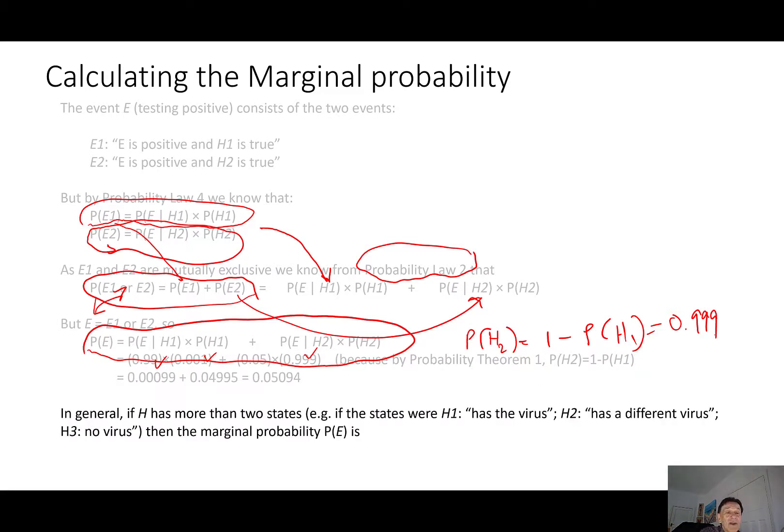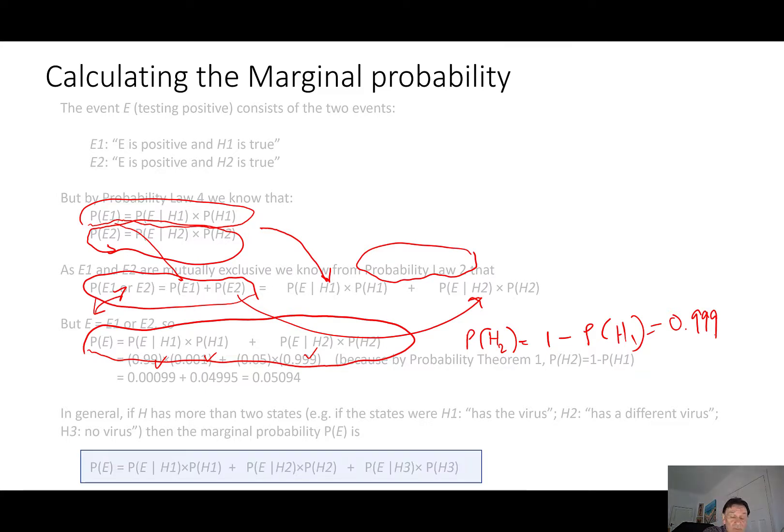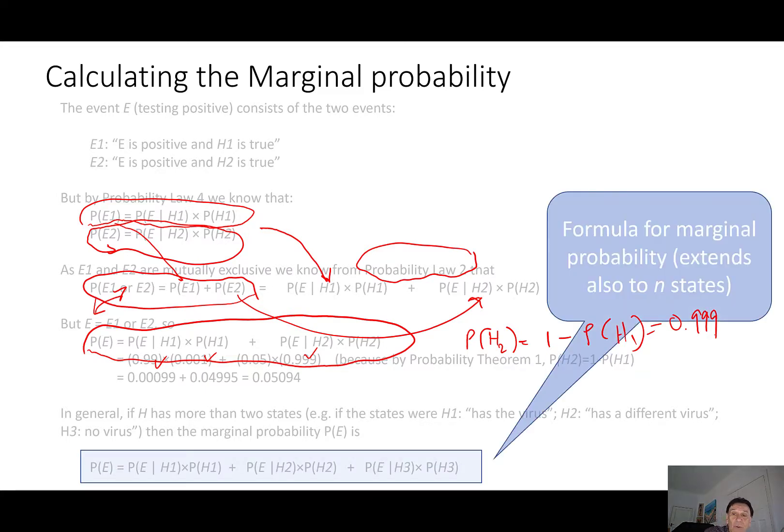And in general, if H has got more than two states, so if the state of H for H1 has a virus, H2 has a different virus, H3 no virus, then the marginal probability of E is just extended. That formula extends to N states. So it would be the probability of E given H1 times probability of H1 plus all the way up to the probability of E given HN times the probability of HN.